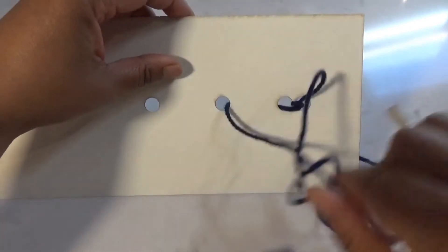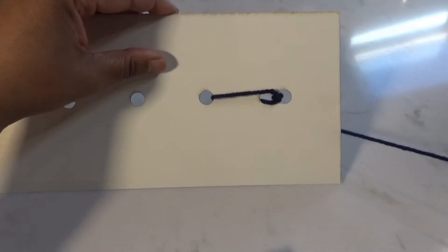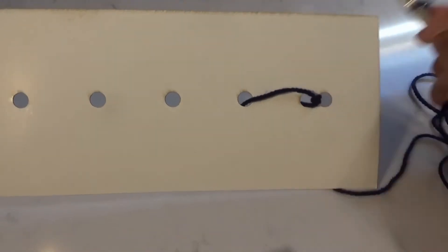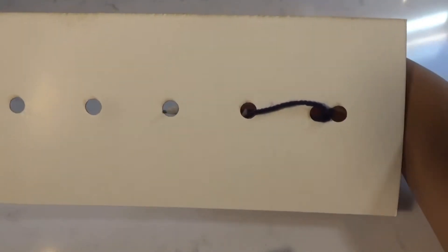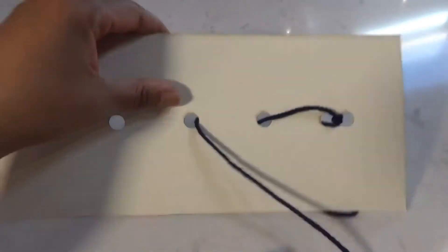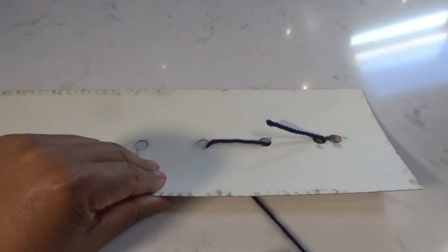If it gets all tangled, there you go. Look at that. Perfect. So with the running stitch we're going to leave a gap. So we're going to go from behind. And then stop it from getting all tangled up. There you go.